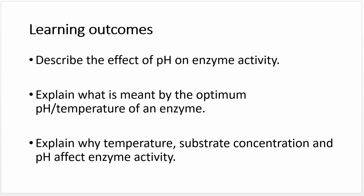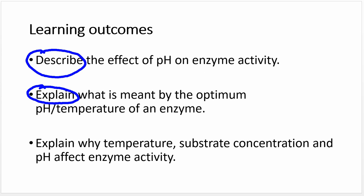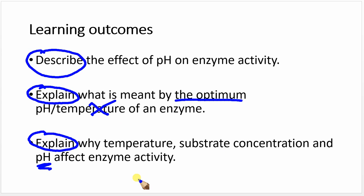So let's look at our learning outcomes for this video. We're going to describe the effect of pH on enzyme activity by looking at a graph. Then we're going to explain what we mean by the optimum pH. And finally, we're going to explain why pH affects enzyme activity — we're not looking at temperature or substrate concentration here.